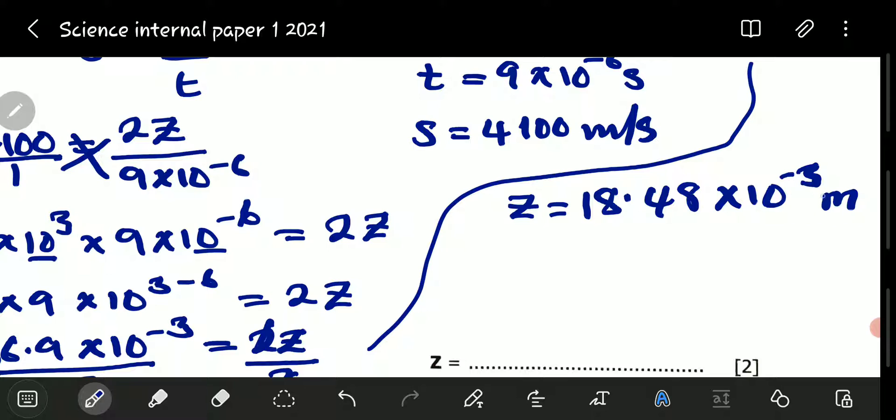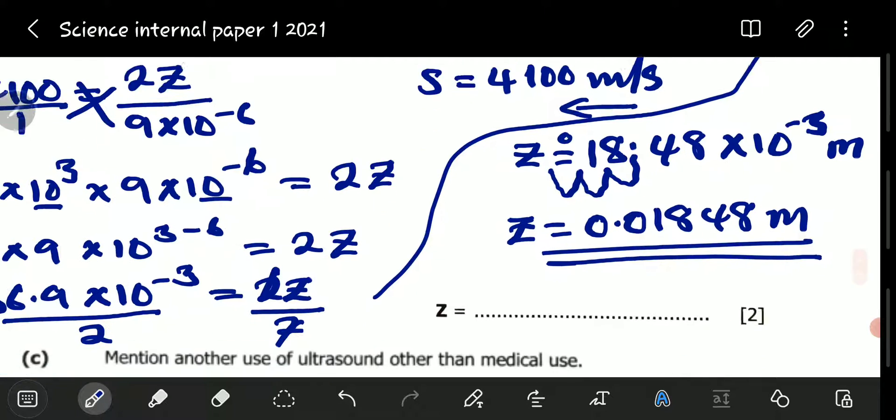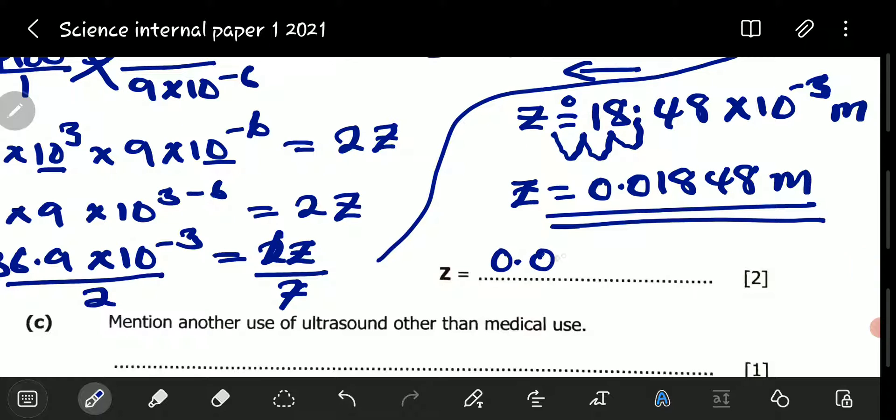The power here can be removed by moving the decimal place three times going to the front. So, there should be a 0 here. So, it means that Z will be equal to 0.01848 meters. So, that is my Z. This is 0.018 meters. That is the thickness.